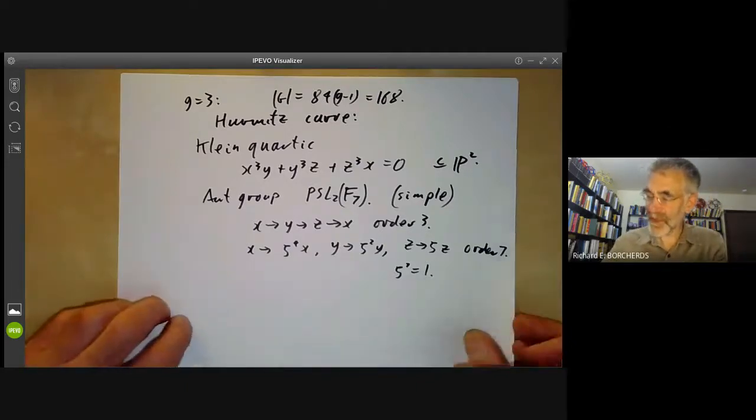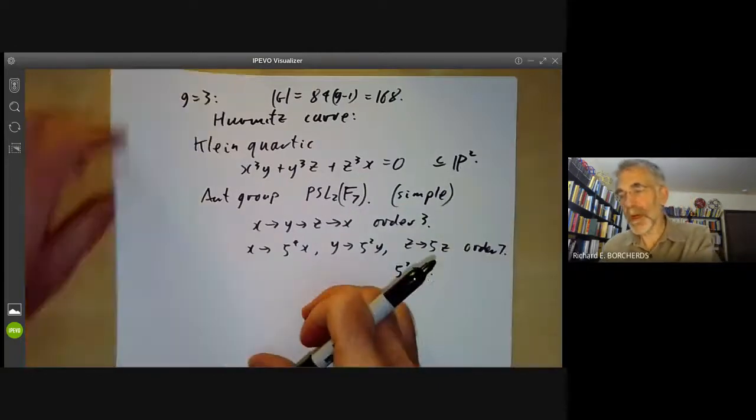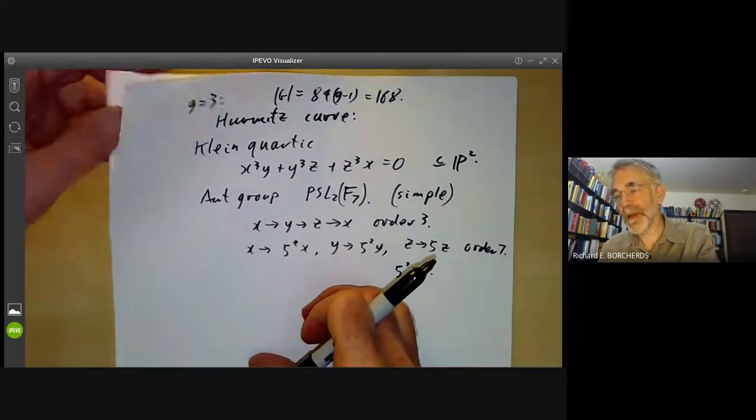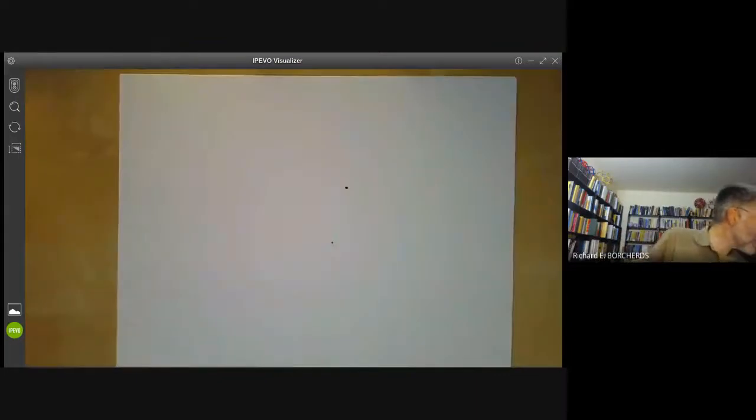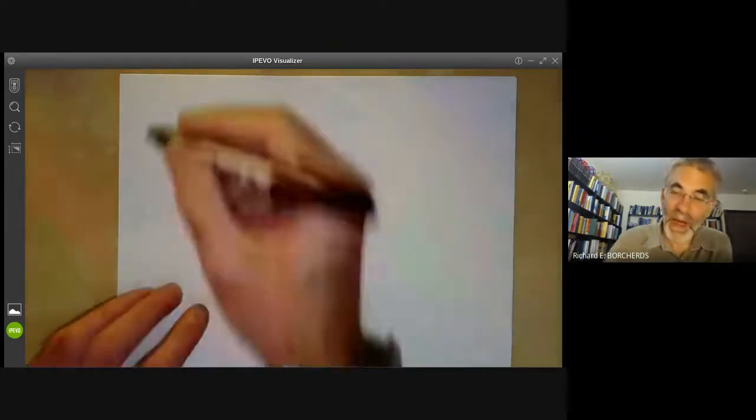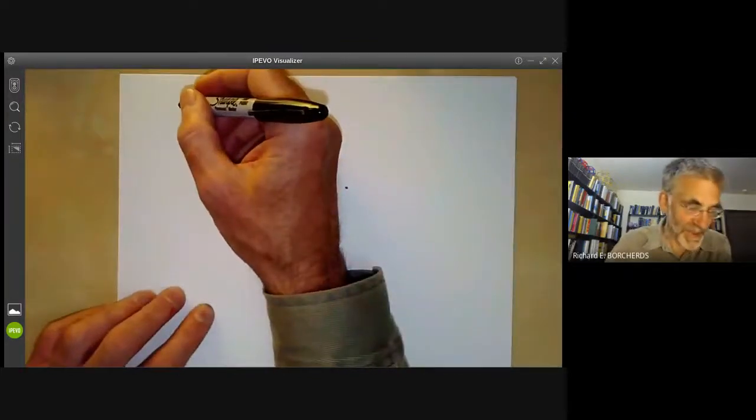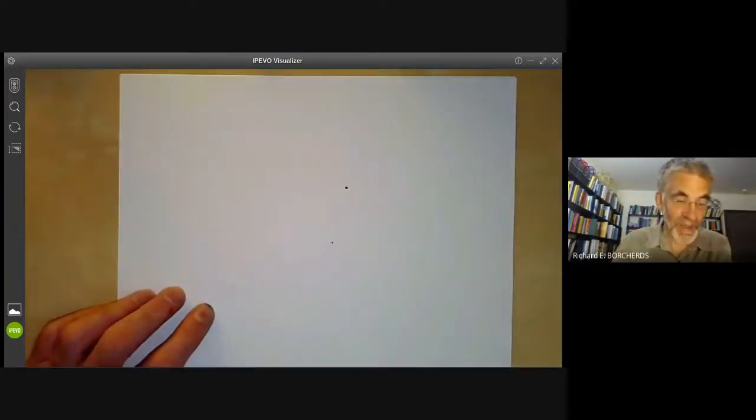Finally, I've mentioned once or twice that we work in characteristic zero. In characteristic p, this proof doesn't work because we can't define Euler characteristics. Well, we can define Euler characteristics, but that involves étale cohomology and they don't behave in quite the same way as they do in characteristic zero. So in finite characteristic, the Hurwitz upper bound on the automorphism group definitely fails.